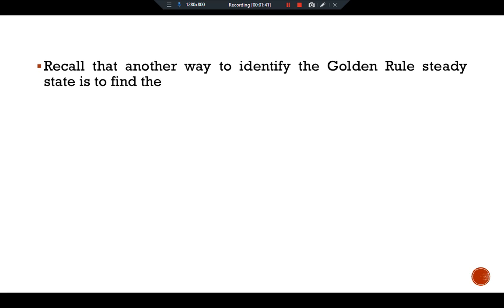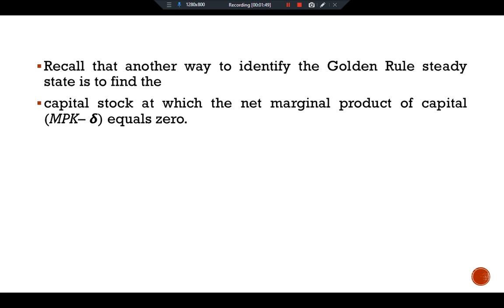Recall that another way to identify the golden rule steady state is to find the capital stock at which the net marginal product of capital MPK minus delta equals 0.1. For this production function, the marginal product is MPK equals k static divided by 2 square root k.